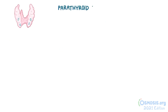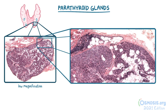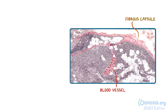Moving on to the parathyroid glands. This low magnification image shows how different the tissue looks even at first glance. The parathyroid does have its own thin fibrous capsule that also extends inward, carrying nerves, lymphatics, and blood vessels, although the nerves and lymphatics are not easily seen in this image. The fibrous connective tissue in the parathyroid also forms irregular lobules.